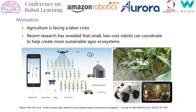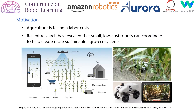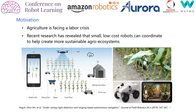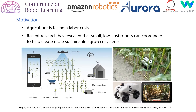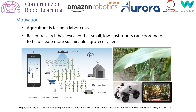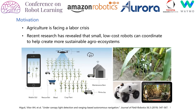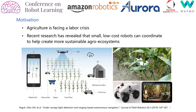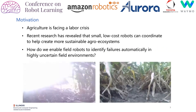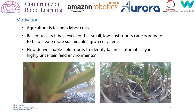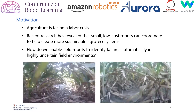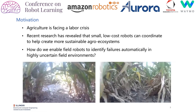Agriculture is currently facing a labor crisis. To enable the autonomous farm of the future, the field robot Teresentia has been introduced in recent years. Teresentia is a compact agriculture robot which navigates through rows of crops under cluttered canopies to collect data on plant traits. Due to the low accuracy of the GPS signal under the crop canopy, either lidar-based or vision-based navigation algorithms have been adopted on the robot.